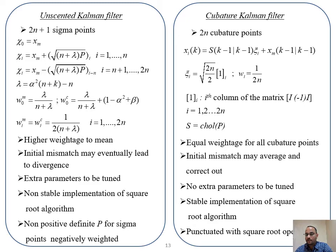In the UKF, any initial mismatch may eventually lead to filter divergence, while in the CKF equal weightage causes any initial mismatch to average out. There are extra parameters to tune for UKF but none for CKF, so the same tuning methodology used for UKF can be applied to CKF — an important practical advantage.